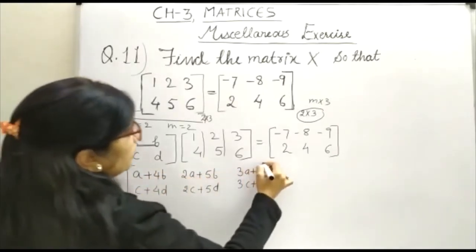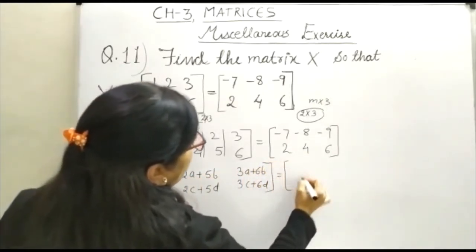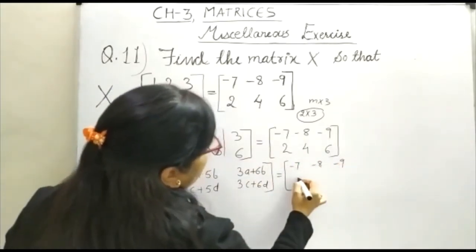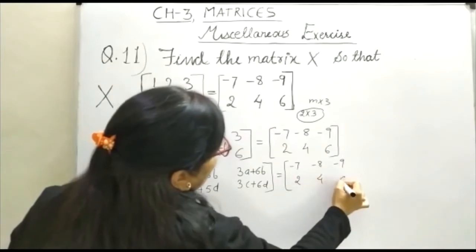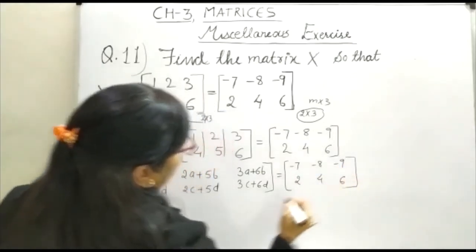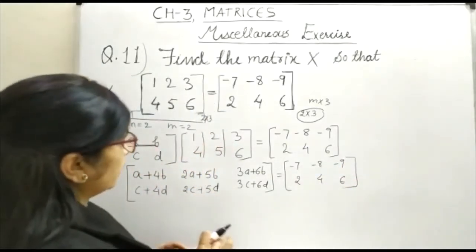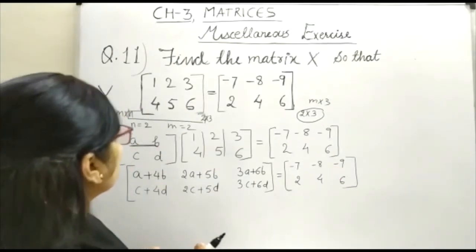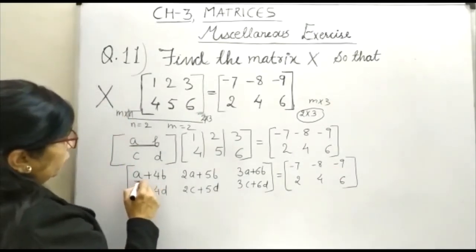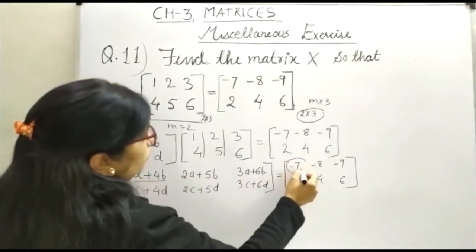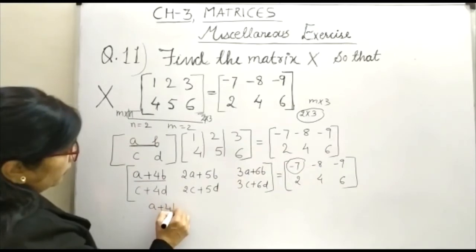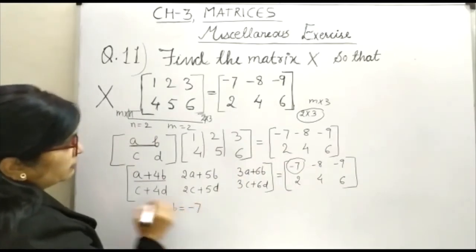Then, there is a sign of equality, that is minus 7, minus 8, minus 9, 2, 4, 6. Now, if two matrices are equal, then their corresponding elements are equal. So you can see here that the value of this will be equal to minus 7. So A plus 4B is equal to minus 7.